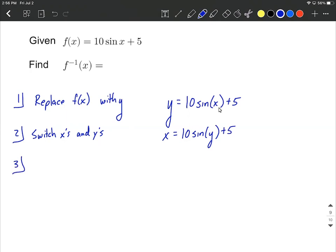Our third step, and this is the one that has most of the algebra going on. Our goal is to solve for y. Get y on one side all by itself. I notice that y is trapped inside of the sine function. So let's get rid of the 10 and the 5 from around it first and isolate the sine of y.